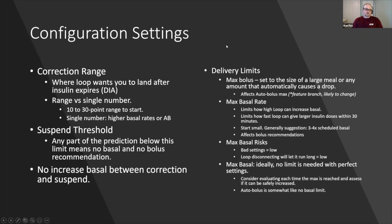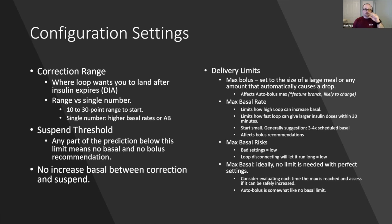In configuration settings in Loop, open the app, hit the gear icon in the bottom right, and you'll see a bunch of settings. The first one is Correction Range. You can open Loop and I'll try to show Tesla's phone. Correction Range is basically where Loop wants you to land after the insulin expires — Loop is trying to get you to this range. It's represented by the blue bar on the top glucose graph.